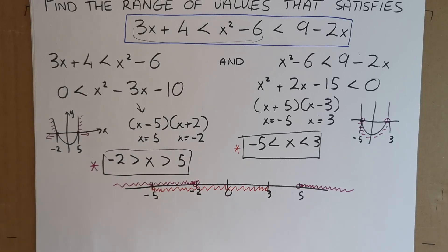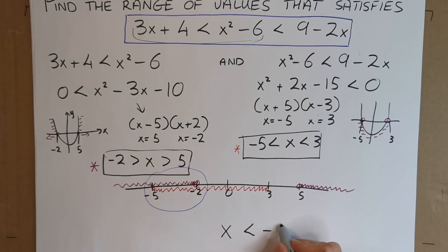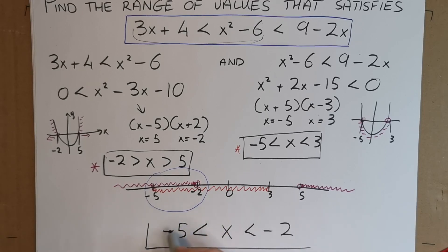So where do they overlap? Well, the only place that they overlap is in here, between minus 5 and minus 2. That's the only section where these solution sets overlap. Therefore, this must be the solution. So therefore, we can write our solution as x must be less than minus 2 but greater than minus 5. And that's it.